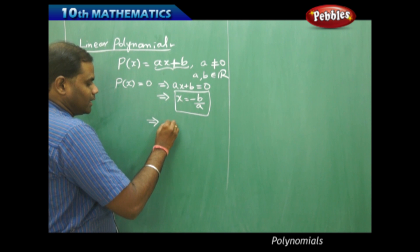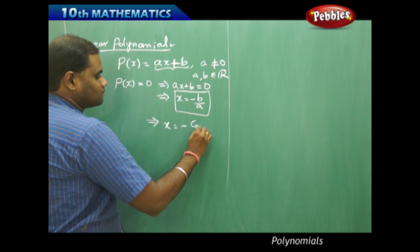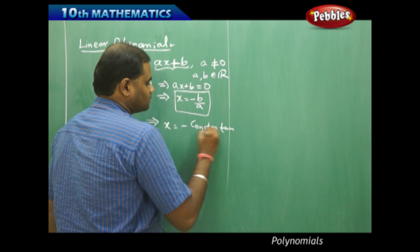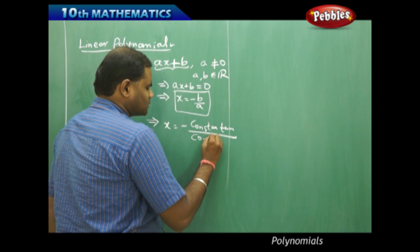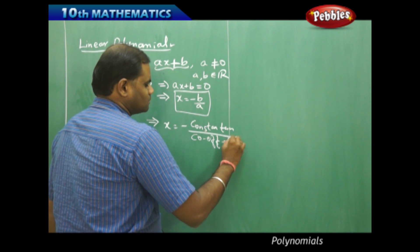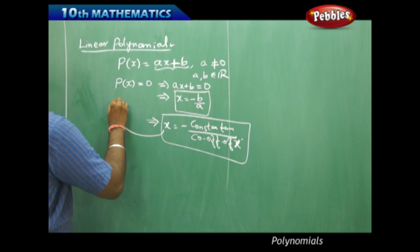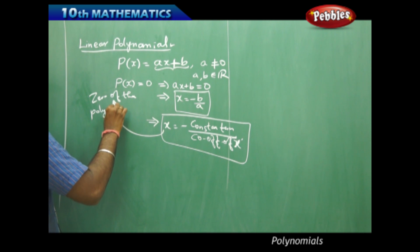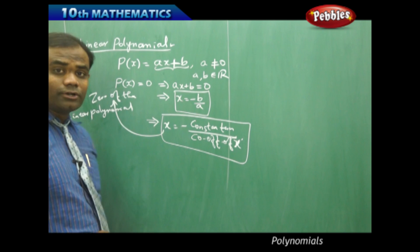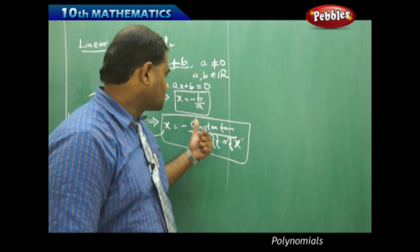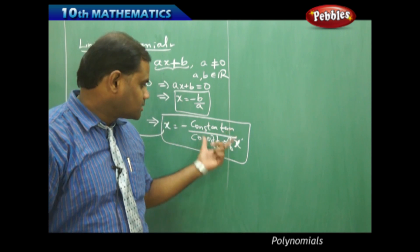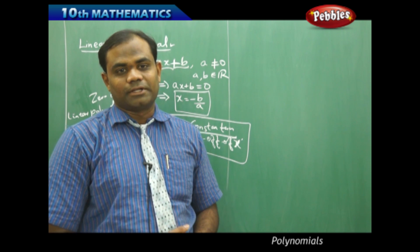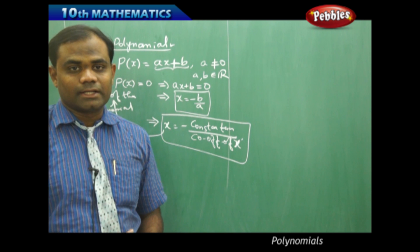This can also be read as negative times the constant term divided by the coefficient of x. Here, b is the constant term and a is the coefficient of x in the linear expression. So the zero of the linear polynomial is negative b over a, or negative times the constant term divided by the coefficient of x.